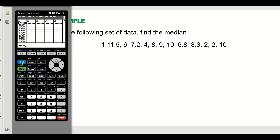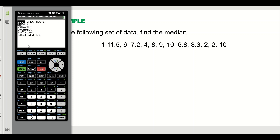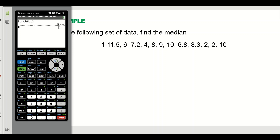After the data is entered, go back to the main screen by pressing Second and More. Then go to STAT again and select number two, which sorts the data in ascending order. You entered the data in List 1, so press Second and number one to get L1, close the parenthesis, and hit Enter. It will say Done, meaning the data in L1 is now in ascending order.